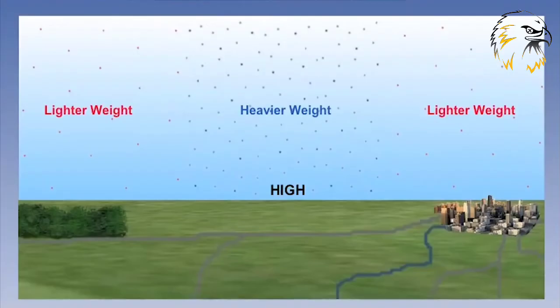To generate a high pressure at the surface, the weight of a column of air must be increased. In other words, there must be a net gain of air to the column.